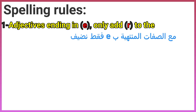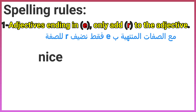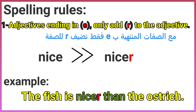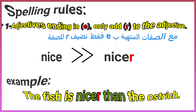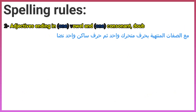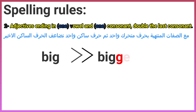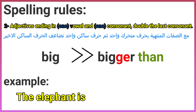Spelling rules: Rule 1 — adjectives ending in 'e' only add 'r'. For example: nice → nicer than. The fish is nicer than the ostrich. Rule 2 — adjectives ending in one vowel and one consonant double the last consonant. For example: big → bigger than.